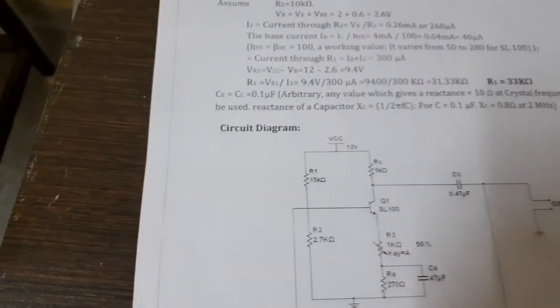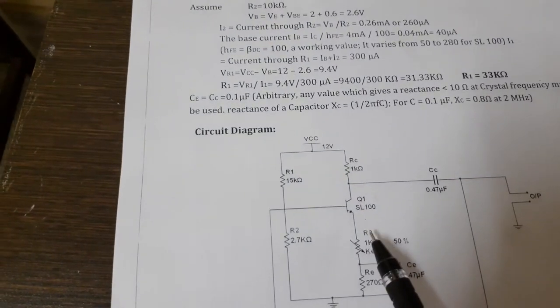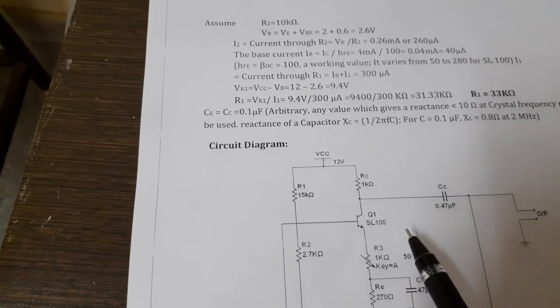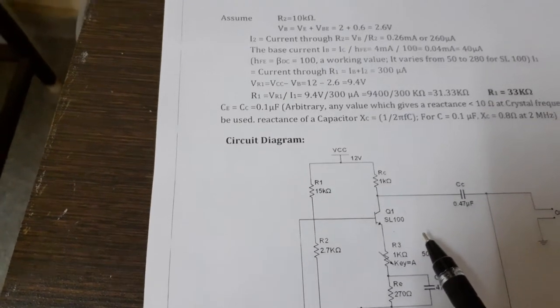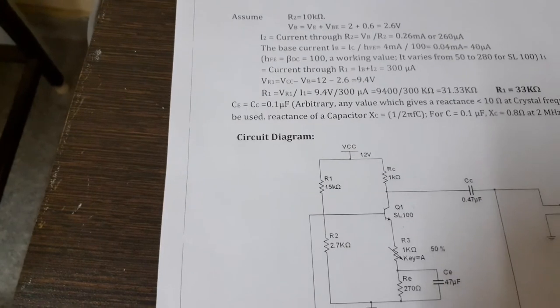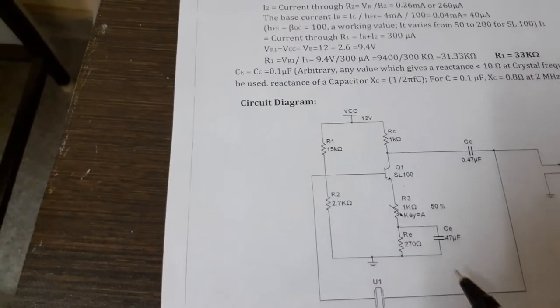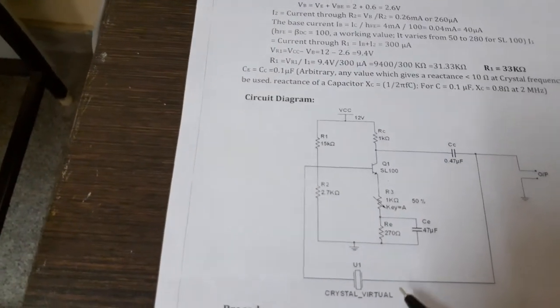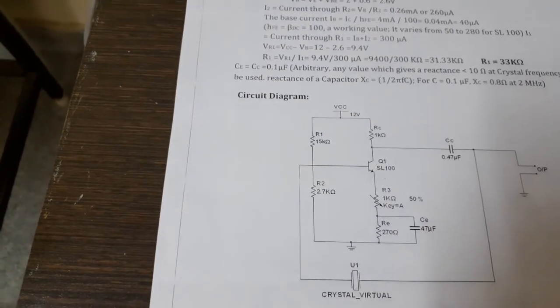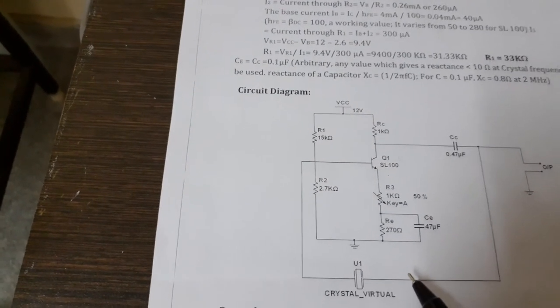Now what this amplifier is doing is it is giving a 180 degree phase shift and feedback network, this is giving a 180 degree phase shift. This feedback network is also giving a 180 degree phase shift. So total will be 360 degree phase shift in this.